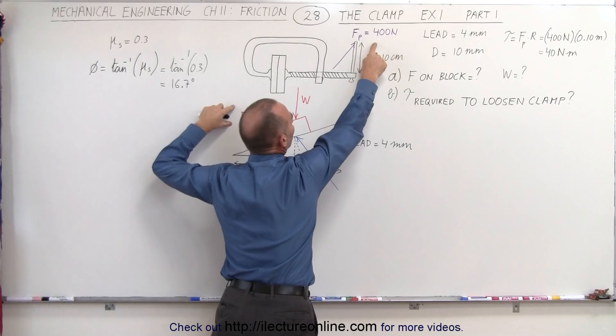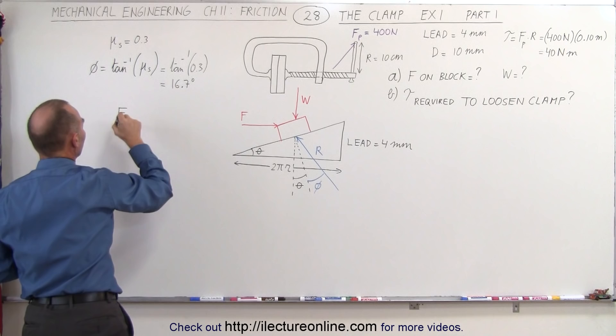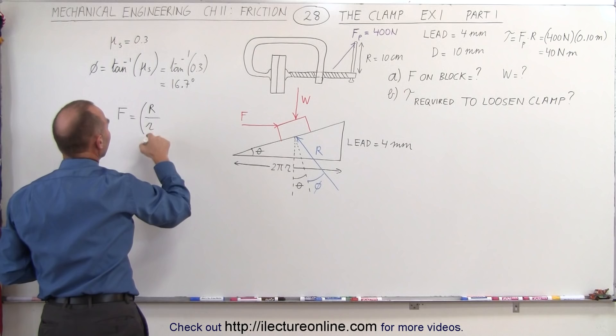So the relationship between F here and Fp there can be done as follows: The force applied to the screw is equal to the ratio of the moment arm R divided by the average radius of the screw multiplied times Fp.